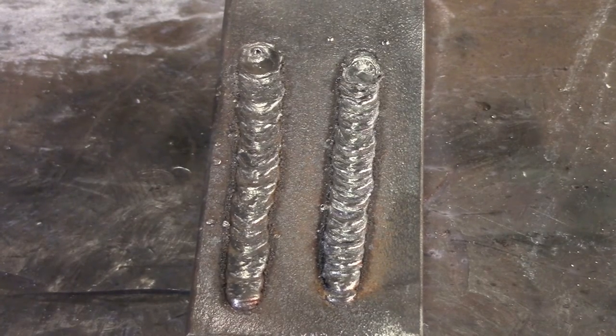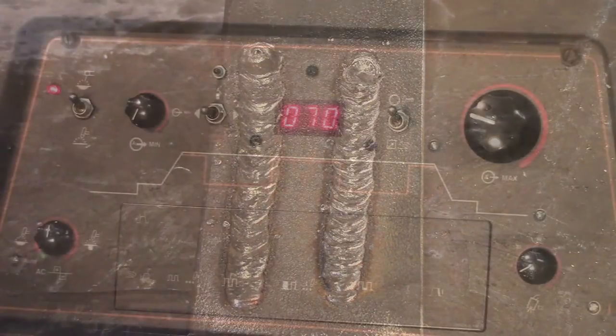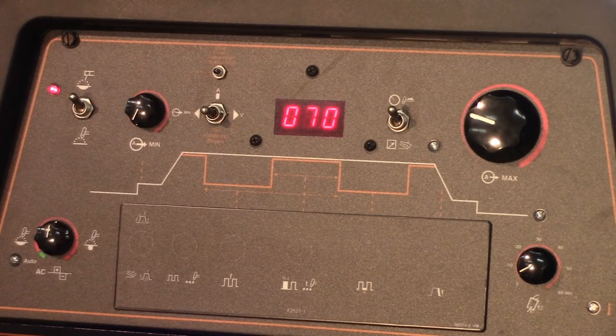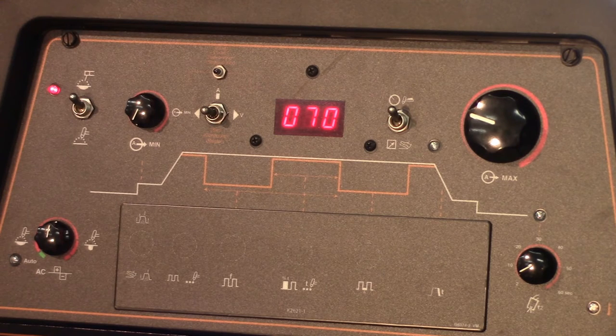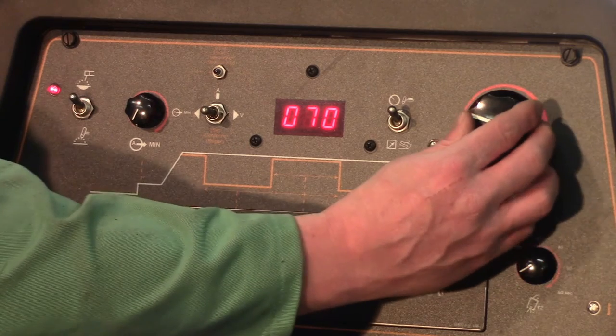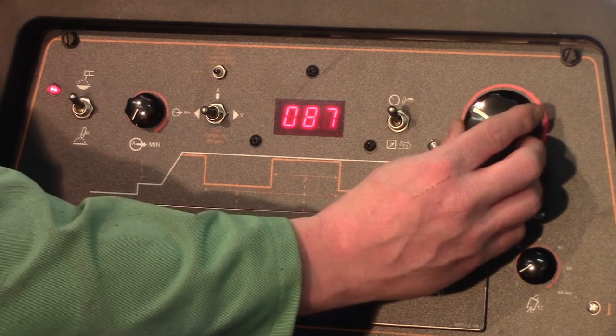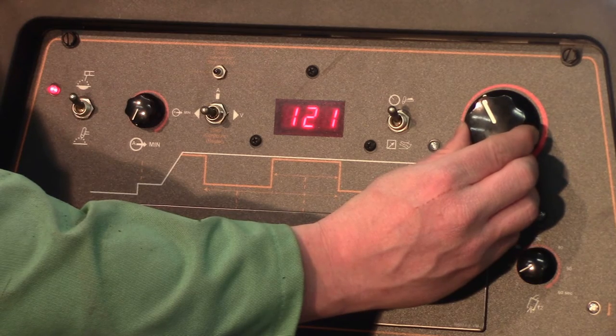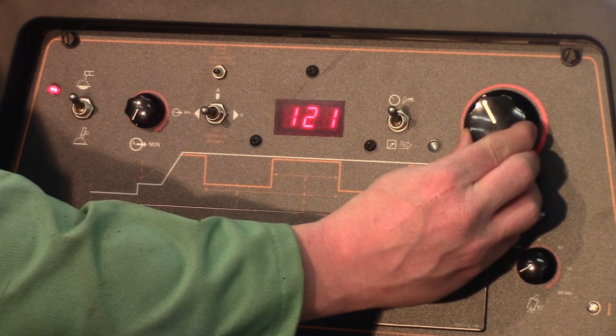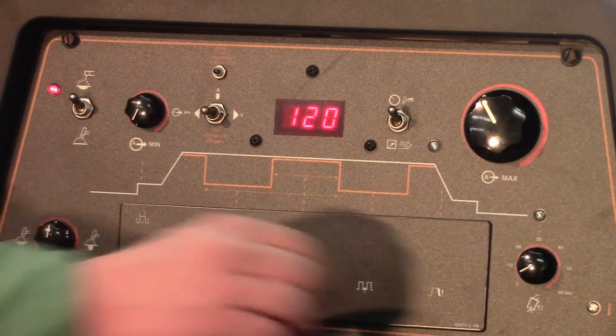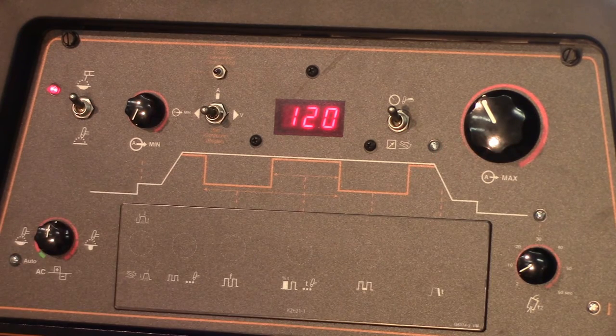So we get into our 1/8 inch 7018 now. 7018 tends to run a little bit hotter, so what we're going to do, and it's also a heavier diameter, so we're going from 3/32 to 1/8 inch, so we've got to make an amperage adjustment. We're going to run it right around 120. If it was 3/32 7018, we'd probably be okay at like 90.